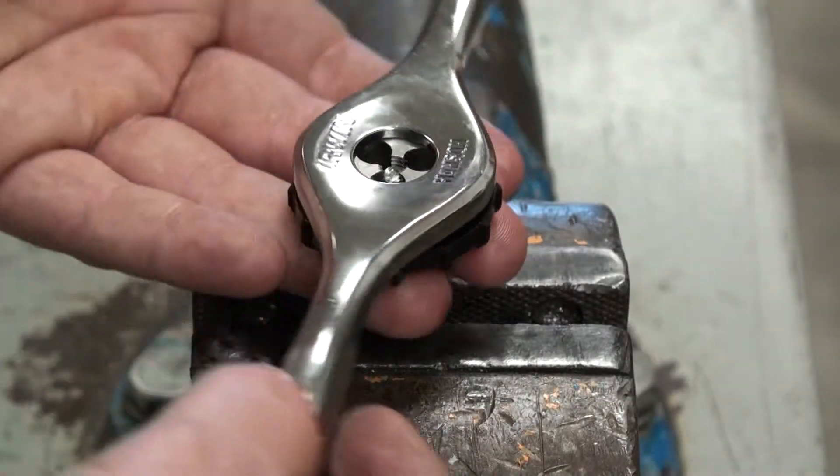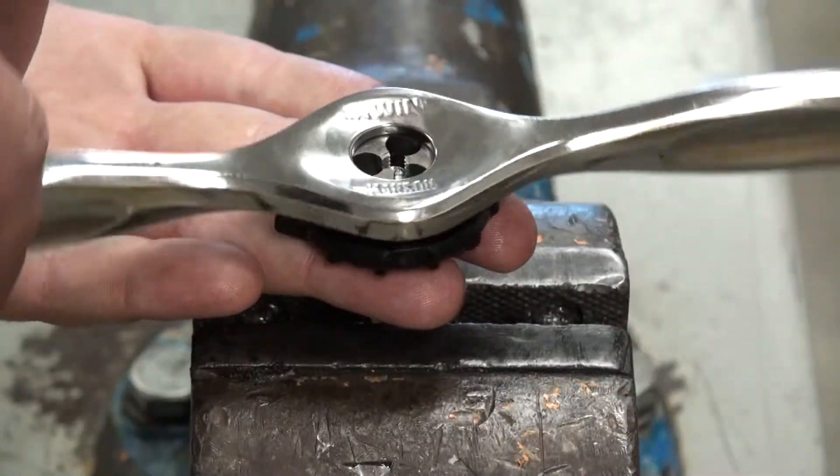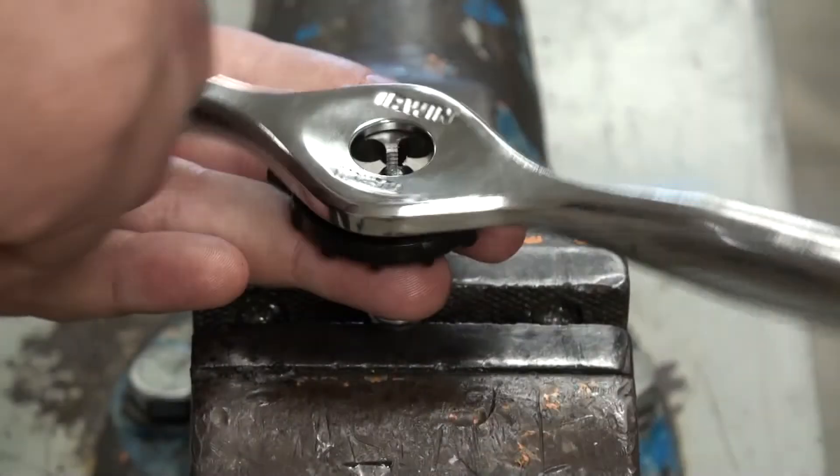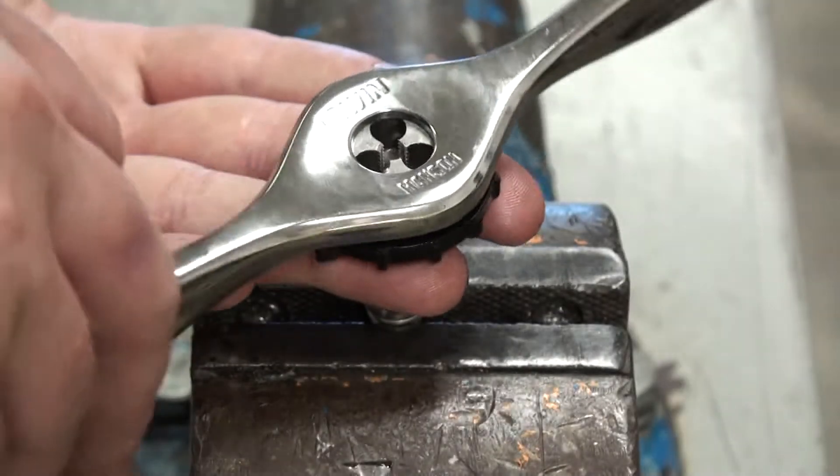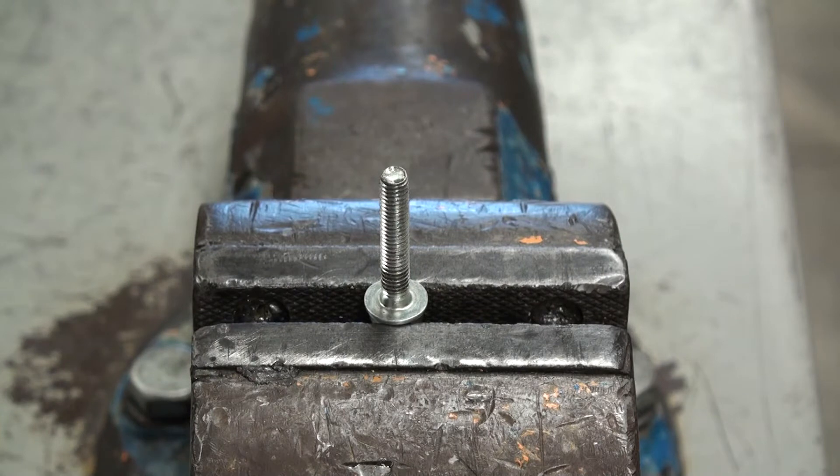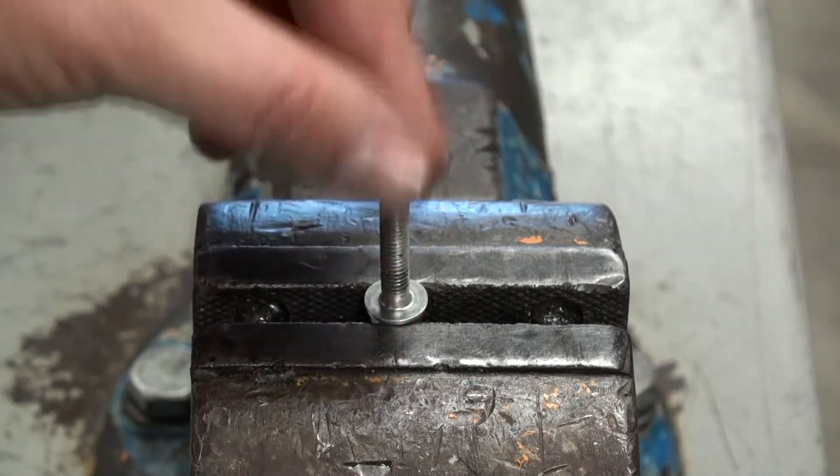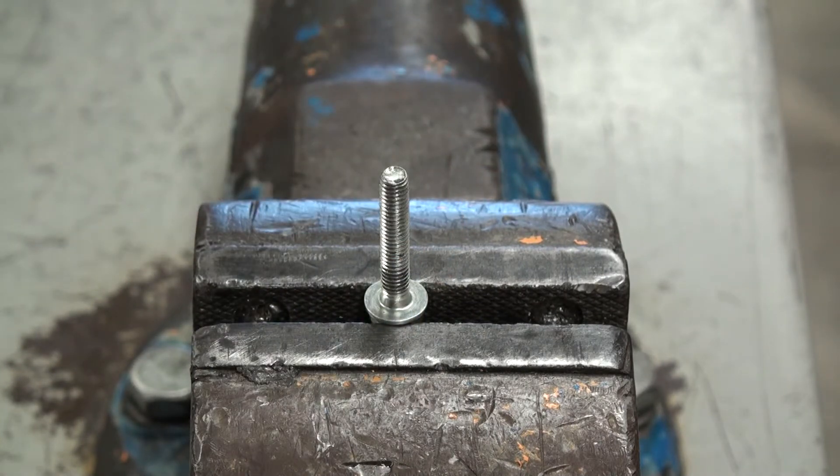As I near the end of the bolt coming back up with the die, I want to make sure I apply pressure upward to make sure the tapered end of the threads on the die don't re-thread the end of the bolt. And there we have it. The bolt threads are nice and fixed and we're ready to move on to the nut.